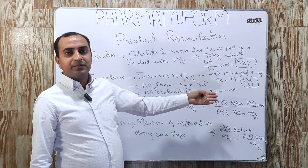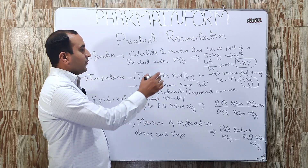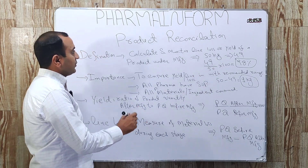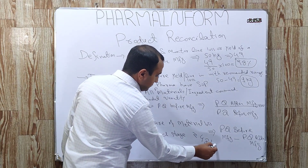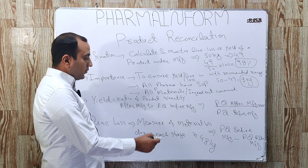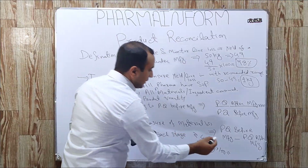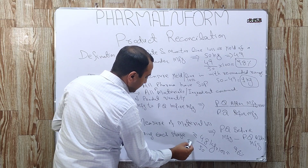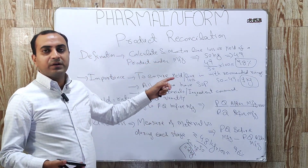For compression: this batch is now delivered to the compression machine, and after compression we get a batch quantity of 48 kilograms. We calculate reconciliation for it. For yield: 48 over 50 multiplied by 100 equals 96%, meaning our yield is 96%. For line loss: 50 minus 48 equals 2 kg. We have reconciled our product after compression — line loss after compression is 2 kg and yield is 96%.